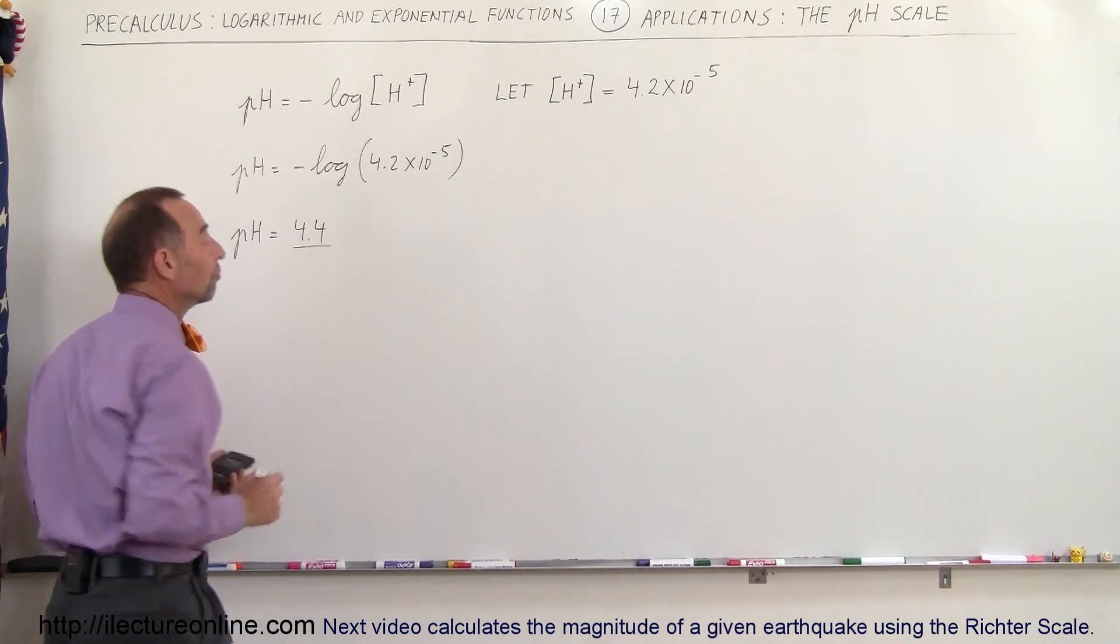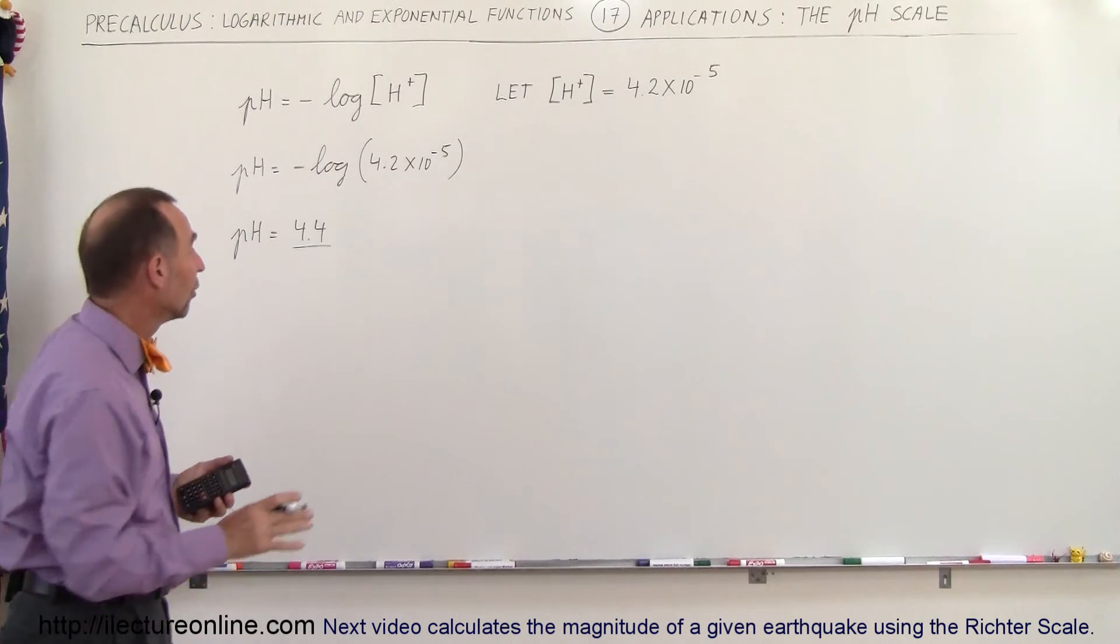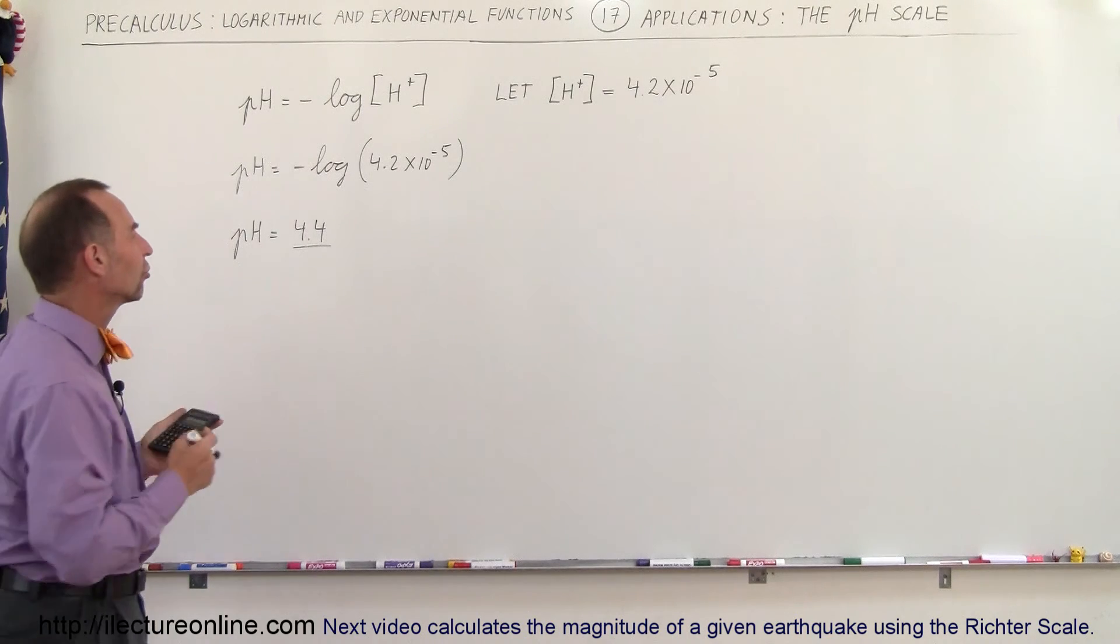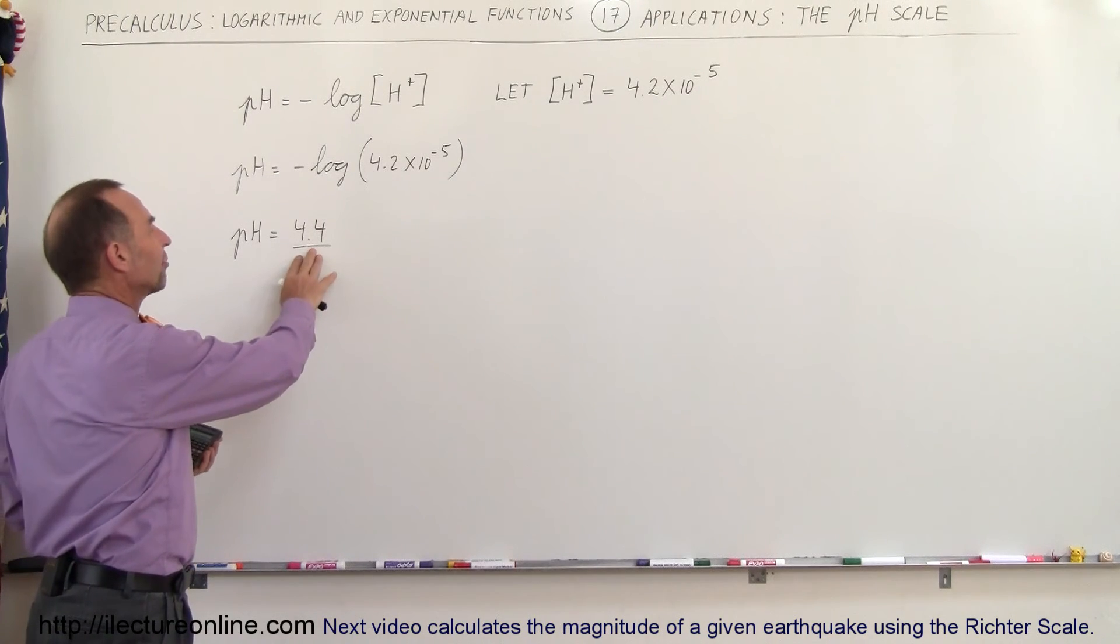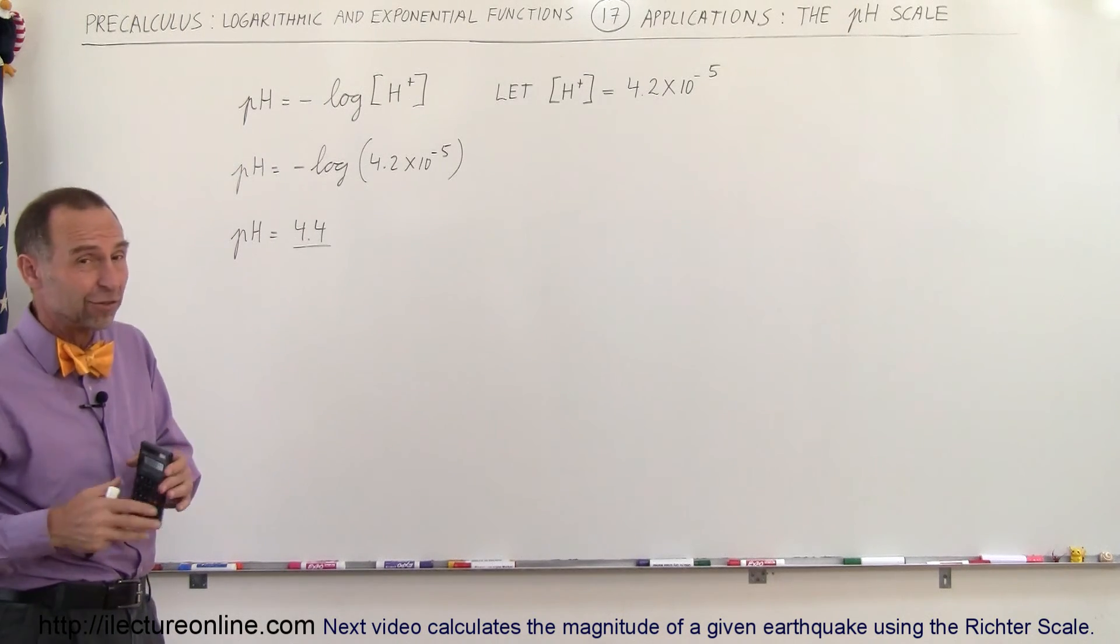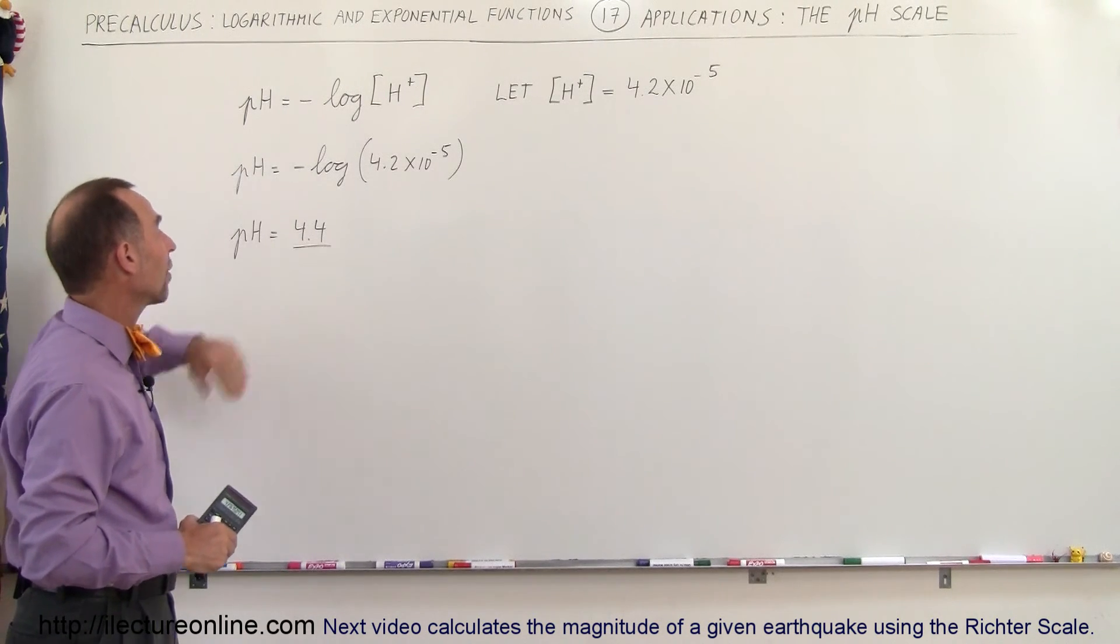So the pH is 4.4 which is definitely less than 7, so you could say that this would indeed be an acidic solution. Not a very strong acidic solution because the pH is not that far from 7. Now when the pH drops to 3 or 2 or even 1.5 or something like that, you're dealing with a very strong acid.